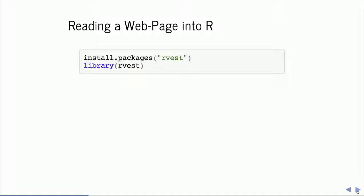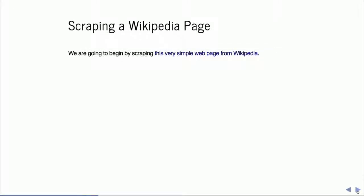We're going to use a package called rvest — one of the aforementioned packages from the tidyverse. For those of you in Python, this is very similar to and borrows heavily from the Beautiful Soup package, which is a very popular module for web scraping in Python. As we have to do with any R package that's not part of base R, we'll begin by installing the package and then loading it into our RStudio session. We're going to begin by scraping a very simple web page from Wikipedia.